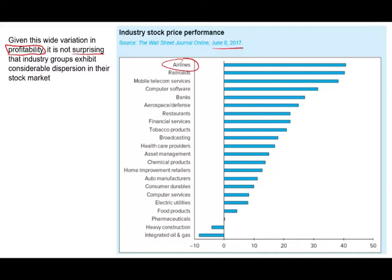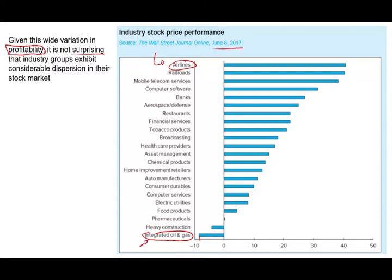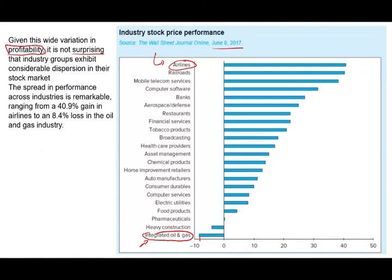Looking at stock market returns, as of June 8th, 2017, the airline industry grew by a little more than 40%, which is pretty good. On the other side, integrated oil and gas had a negative performance. The spread in performance across industries is remarkable, ranging from a 40.9% gain to an 8.4% loss in the oil and gas industry.